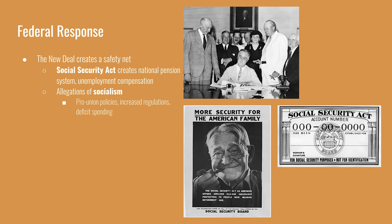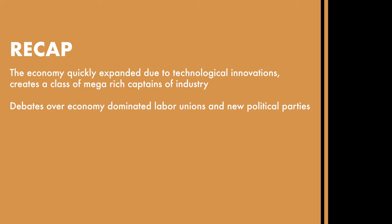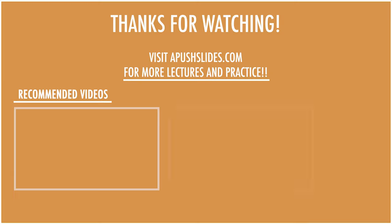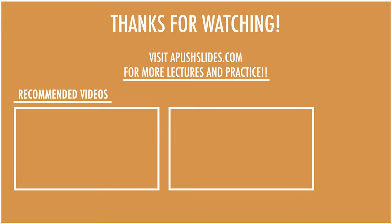FDR's programs for getting the country out of the Depression are collectively known as the New Deal, the topic of the next lecture. To recap: the U.S. continued to become more urban; the stock market crash was the catalyst for the Great Depression; President Hoover was largely blamed for his lack of action after the crash; and the policies of FDR's New Deal built the foundation for a limited welfare state. Visit apushslides.com for more AP exam practice.